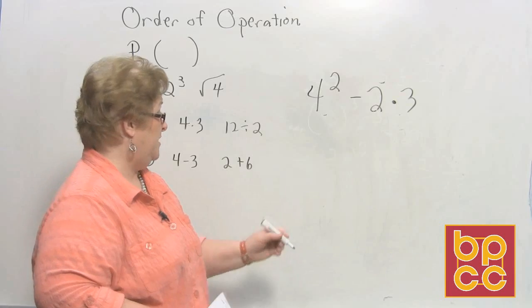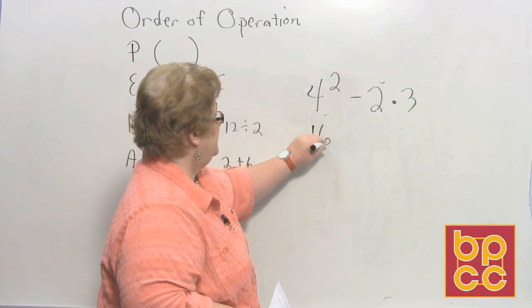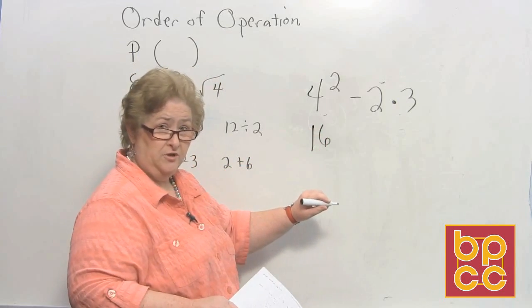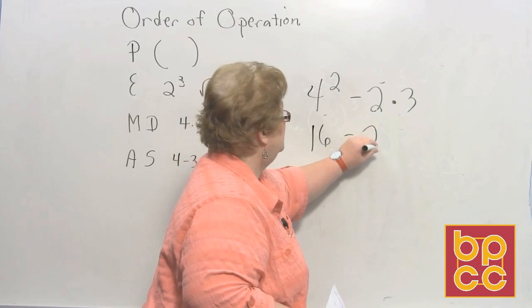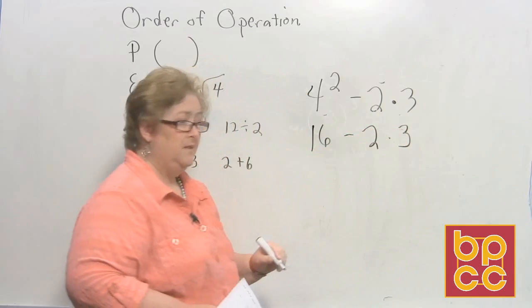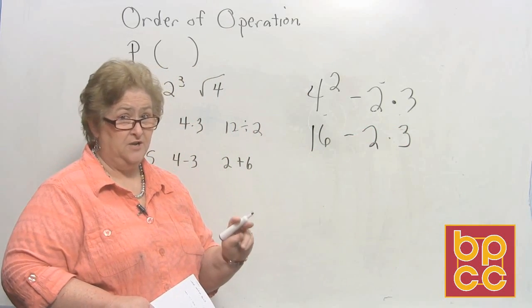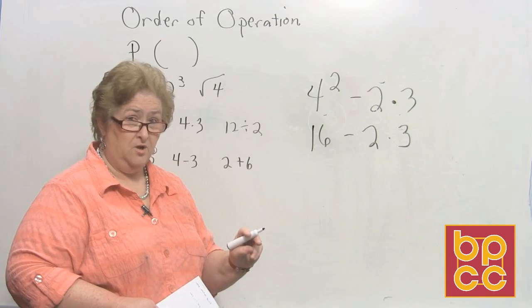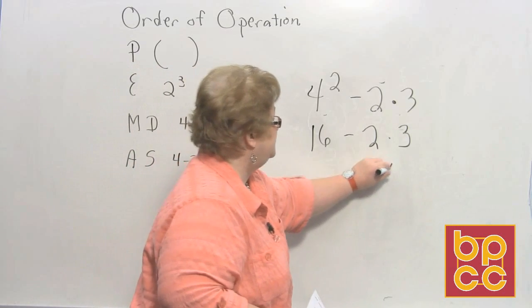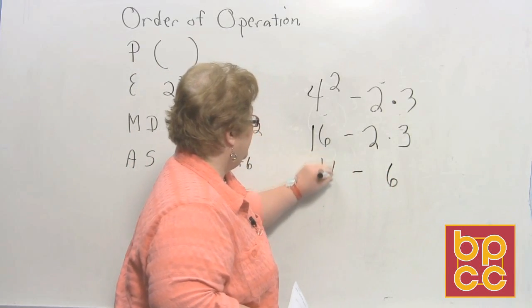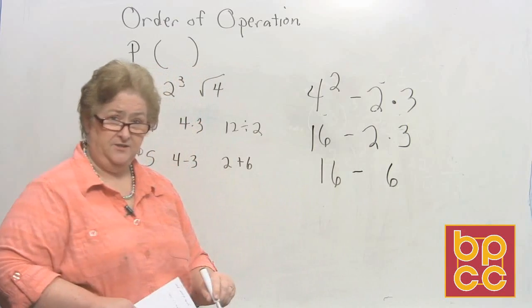But we do need to begin with the squaring. So I'm going to do 4 squared which is 16. I'm going to rewrite the problem for you so you can see each part. Minus 2 times 3. Now the second thing we need to do is not subtract. We need to multiply 2 times 3. So 2 times 3 is 6. And I'll rewrite the problem again.